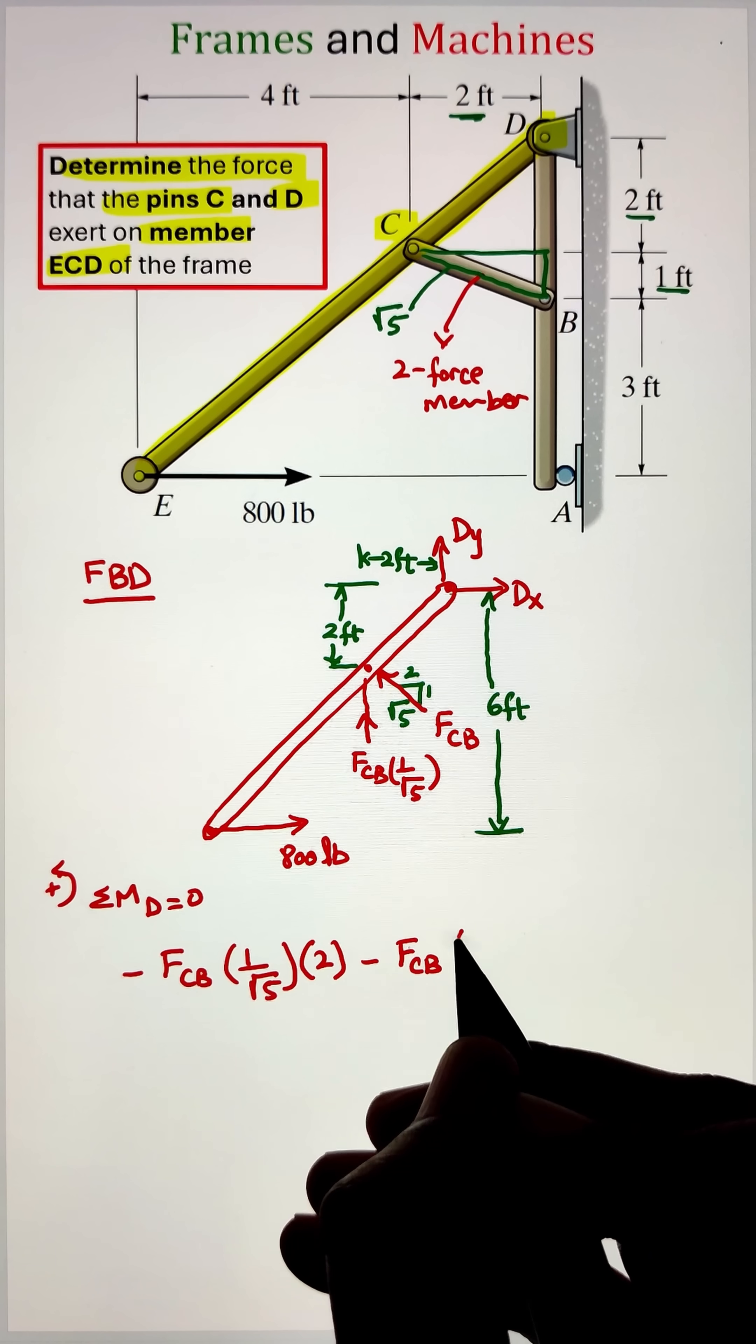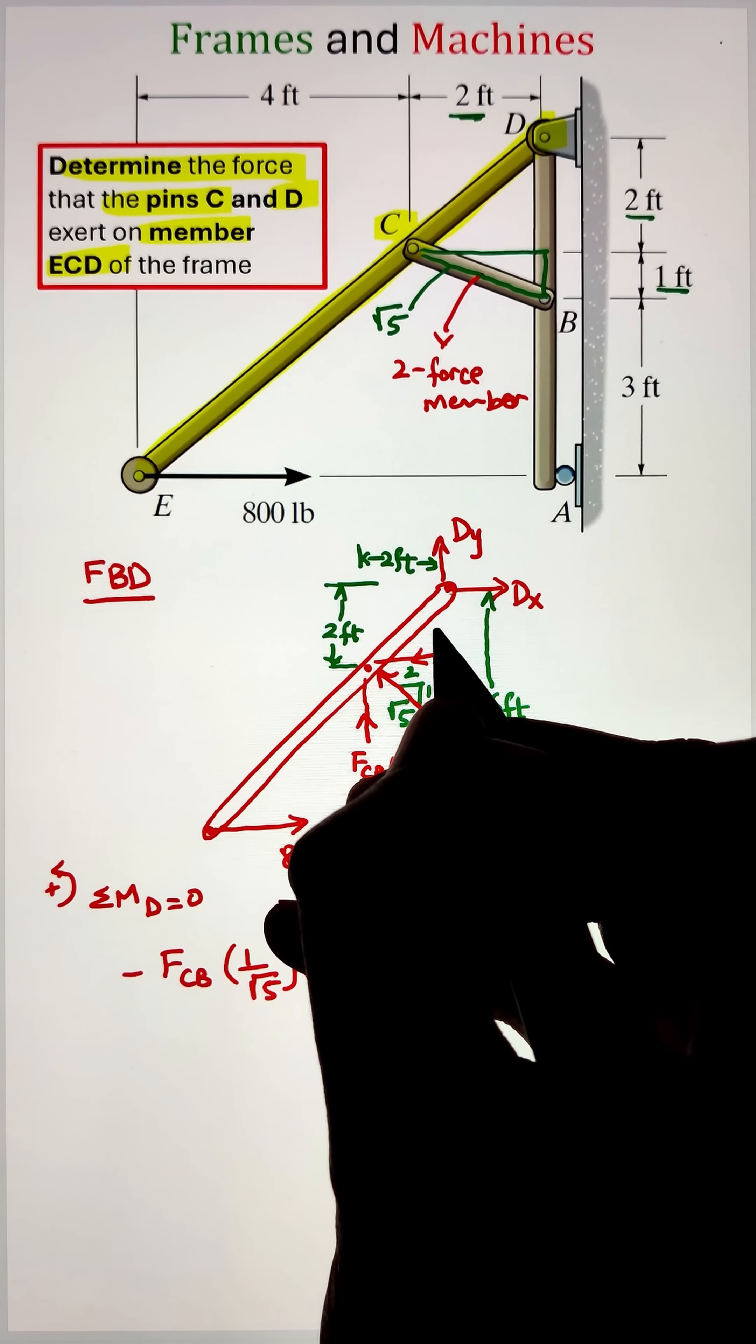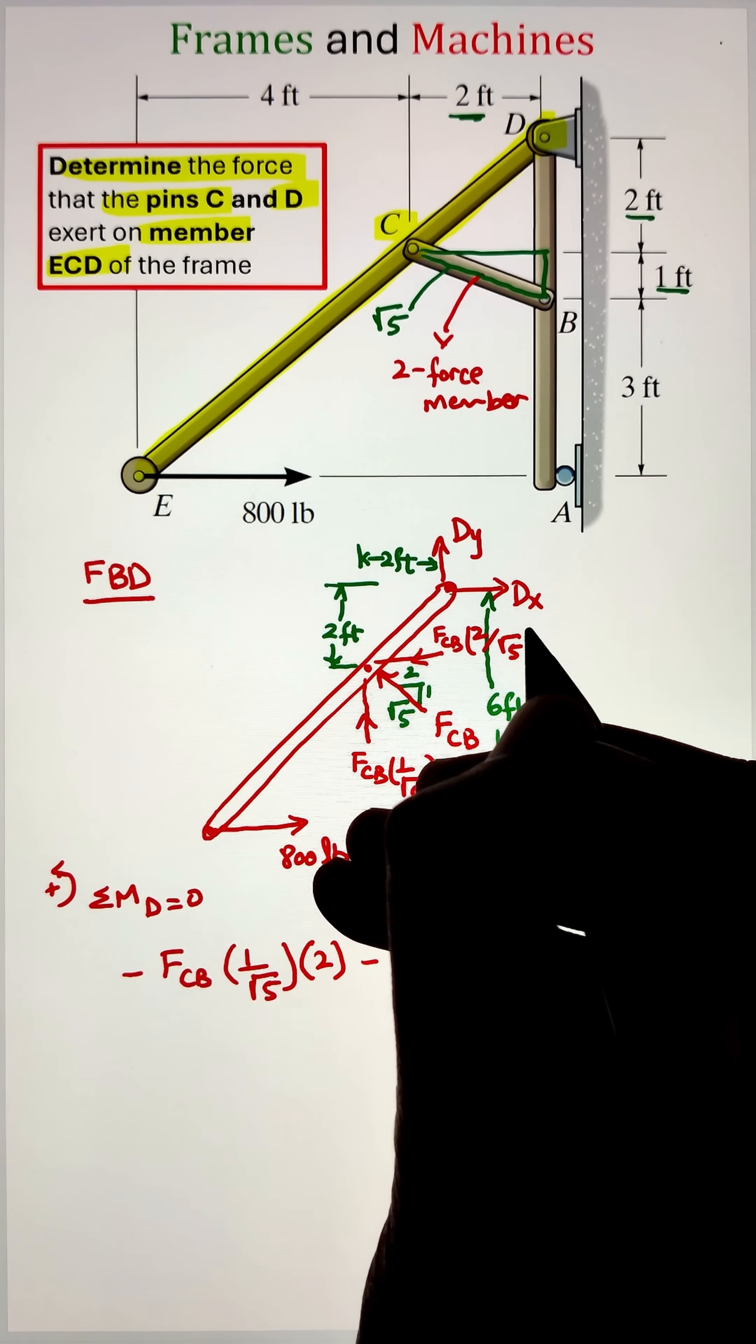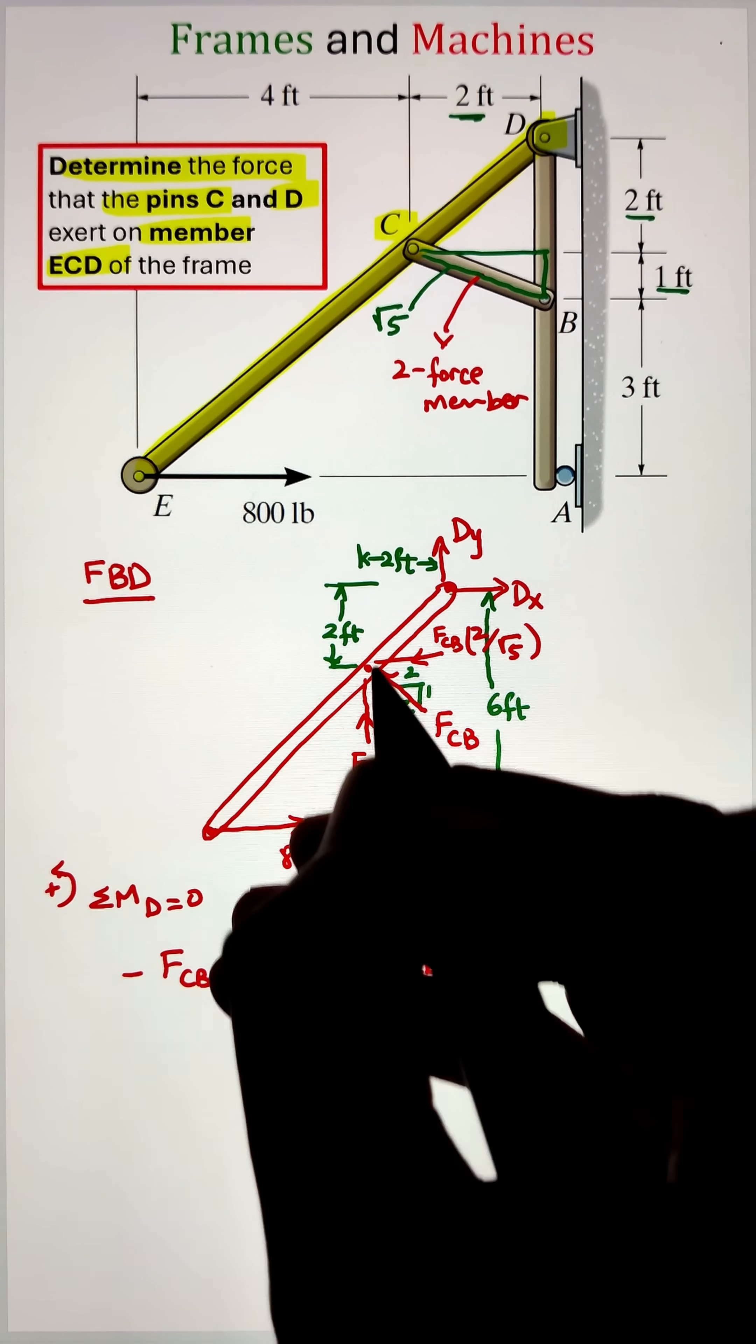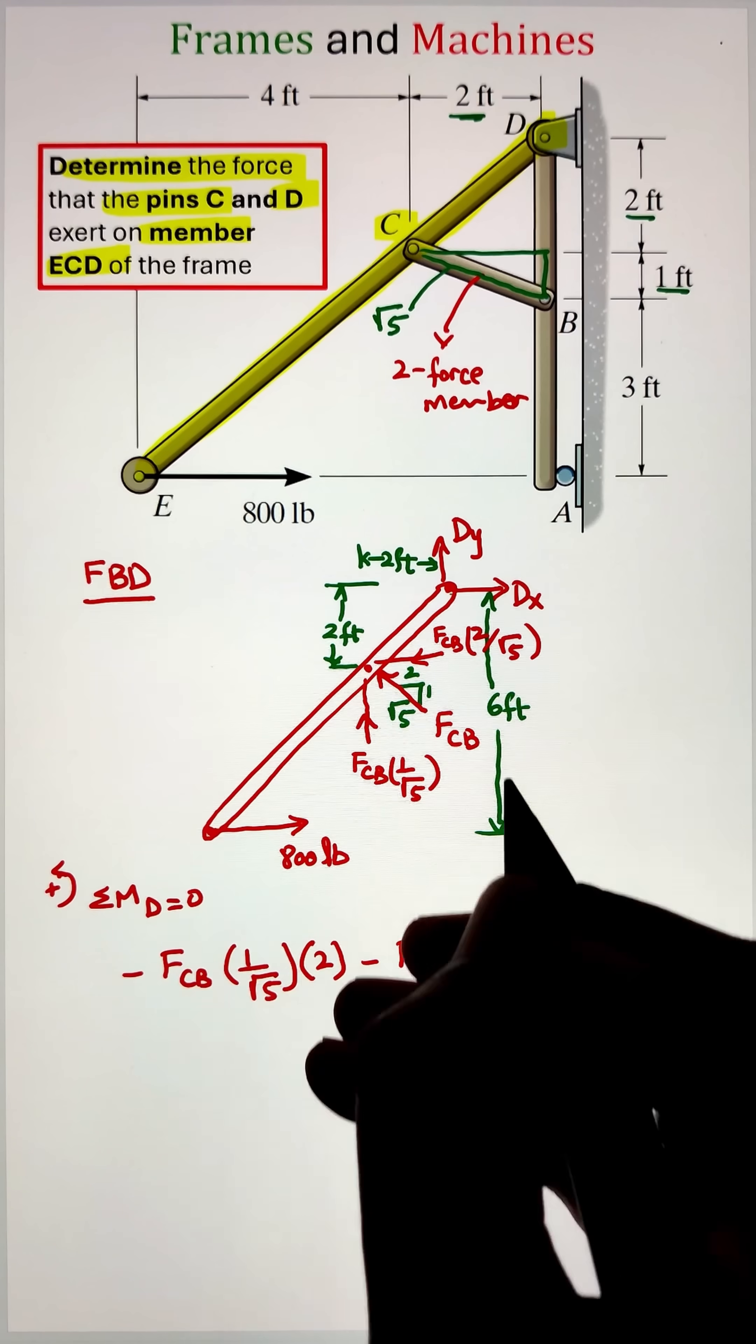The vertical component of force FCB can be calculated by multiplying it with a ratio of one over root five. Here the moment arm is two feet and it is creating a clockwise moment, that's why it is given as negative.